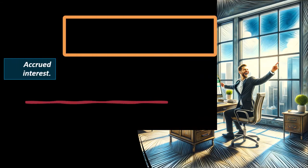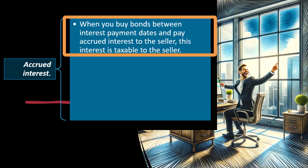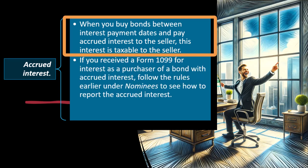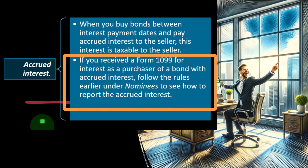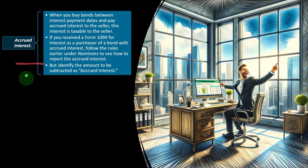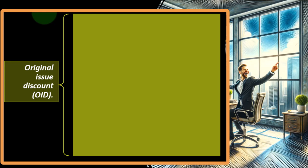Accrued Interest: when you buy bonds between interest payment dates and pay accrued interest to the seller, this interest is taxable to the seller. This is somewhat of an unusual situation because a lot of times most people buying and selling bonds are probably doing so in the form of mutual funds or ETFs, which may have a slightly different structure. If you receive a 1099 for interest as a purchaser of a bond with accrued interest, follow the rules under Nominees to report the accrued interest, but identify the amount to be subtracted as 'accrued interest.'